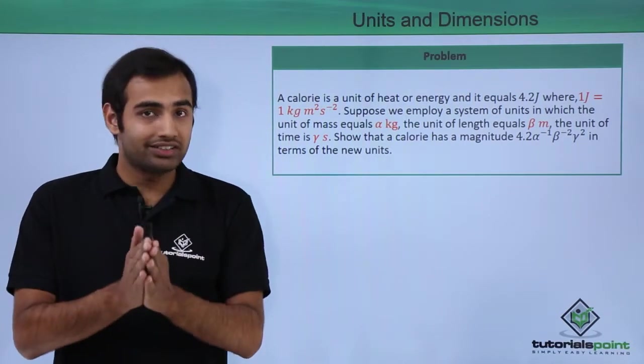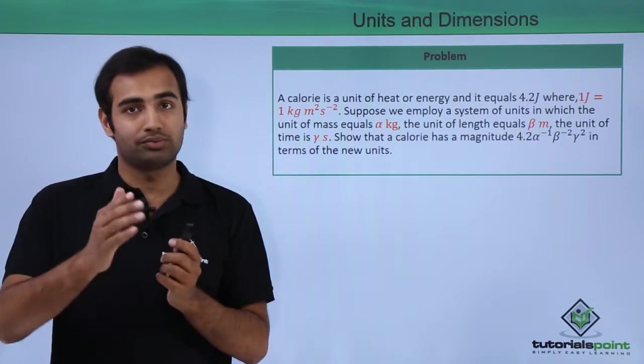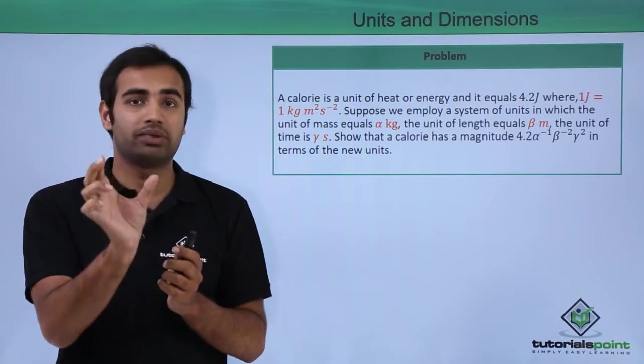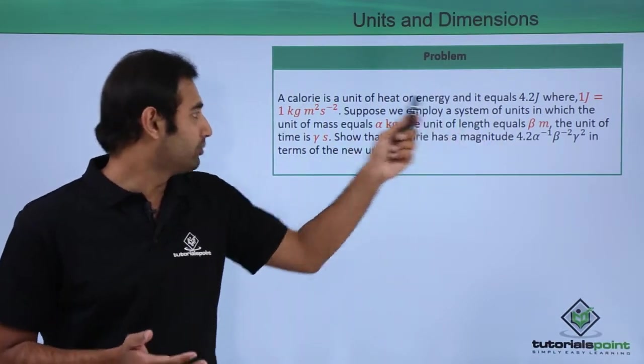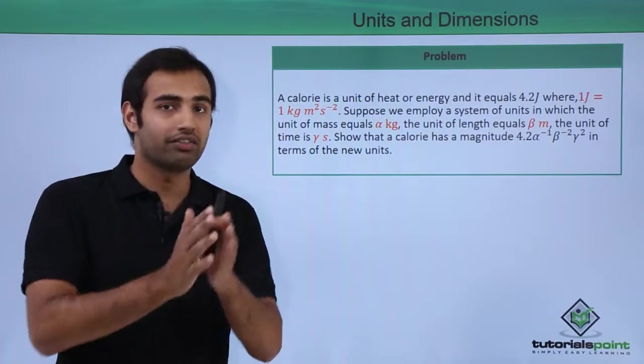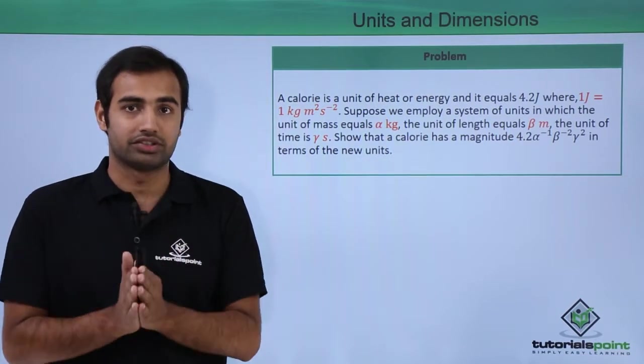So the current standard that we follow for the fundamental units is 1 kg is the most fundamental unit of mass, 1 meter for length and 1 second for time. If we change it to alpha kg, beta meters and gamma seconds, we arrive at the context of this problem. So once we have adapted this new system,